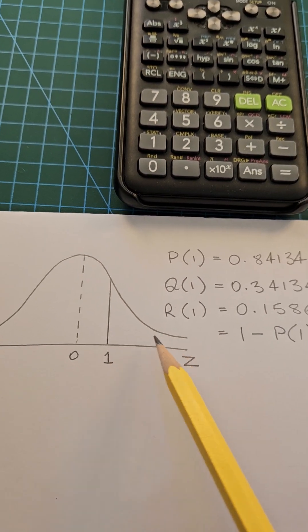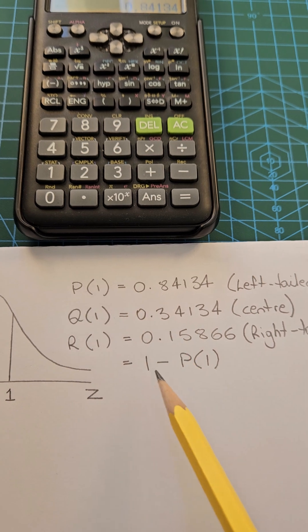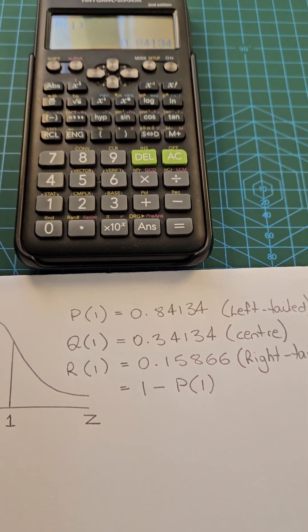So that's the area to the right of z equals one, which is the complement of p of one. So it's equal to one minus p of one.